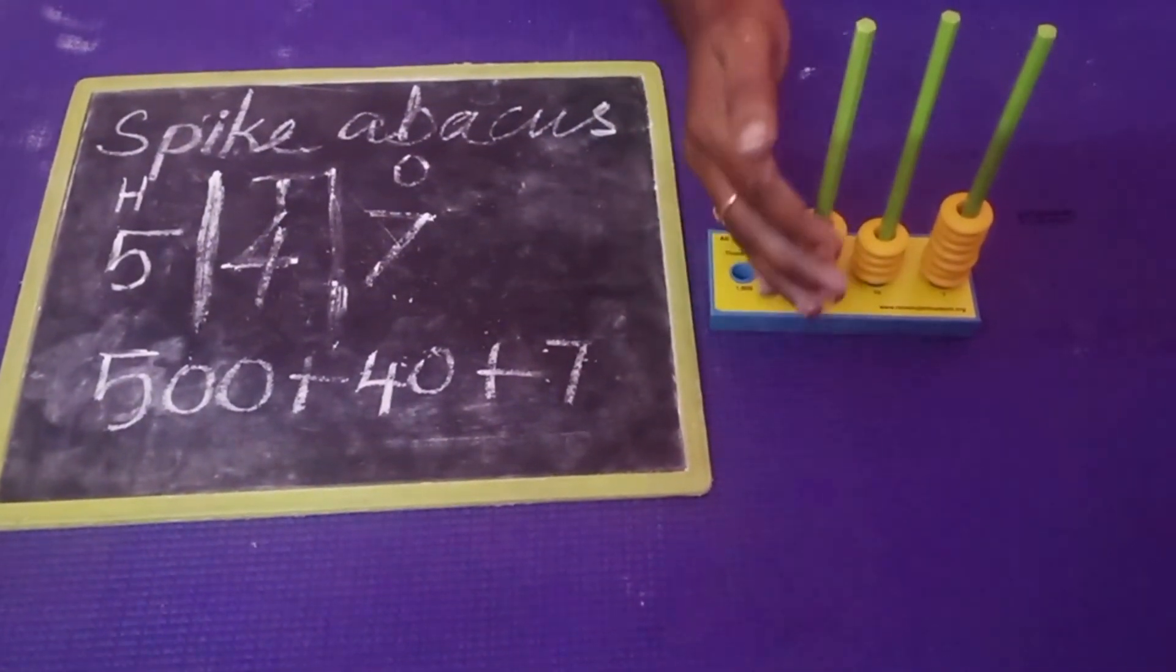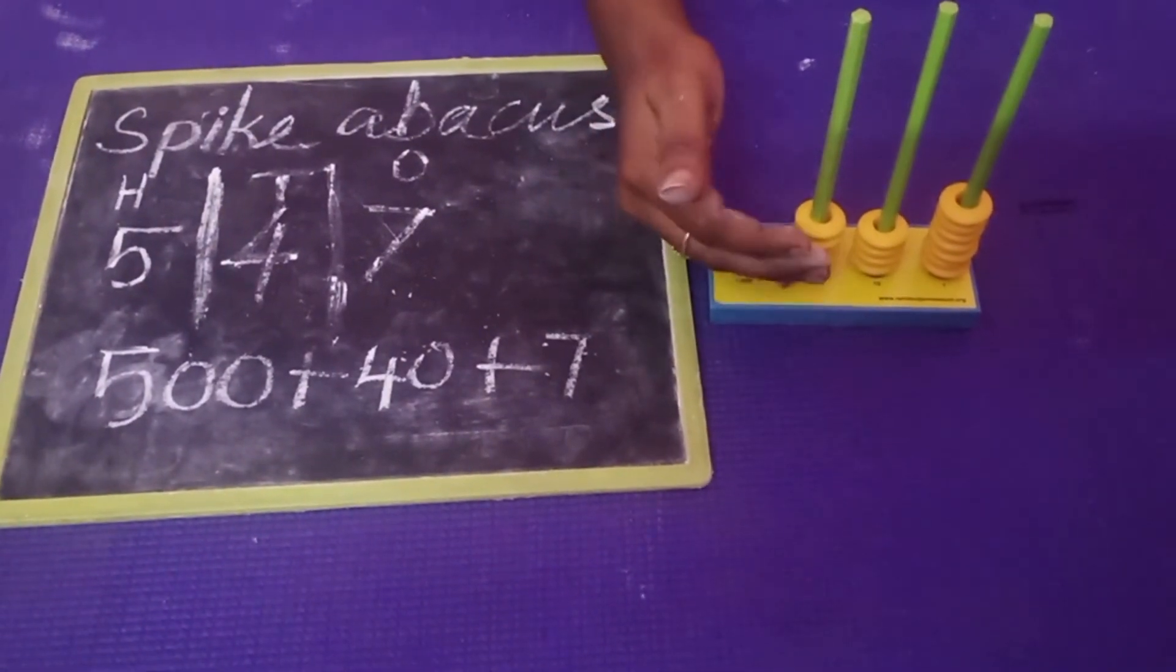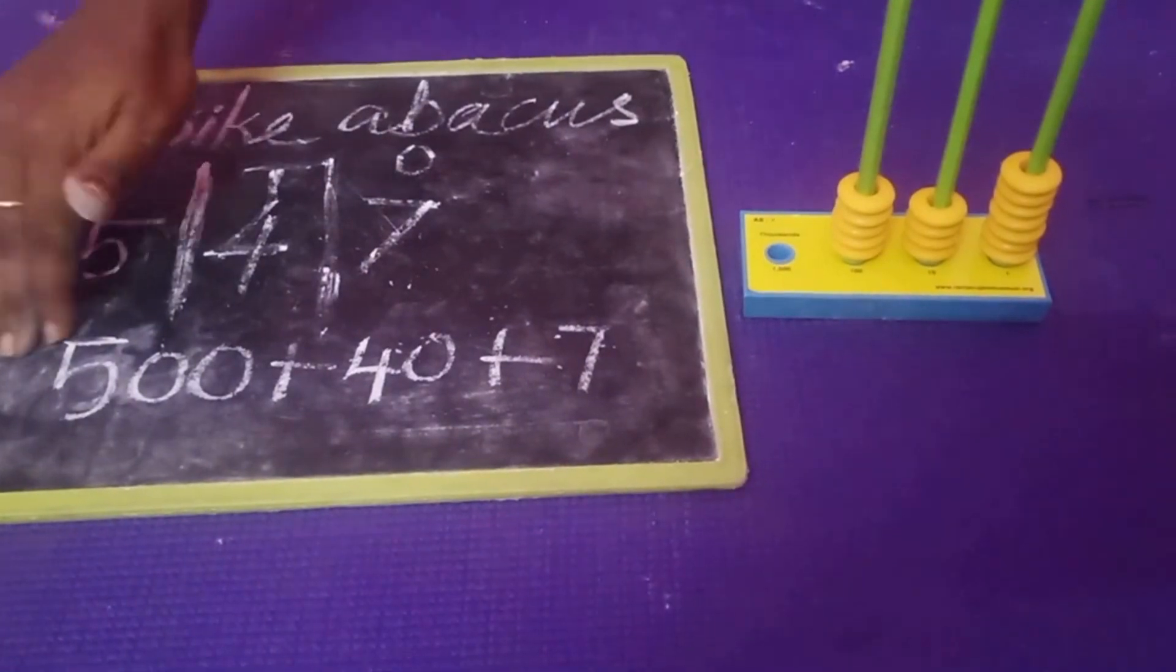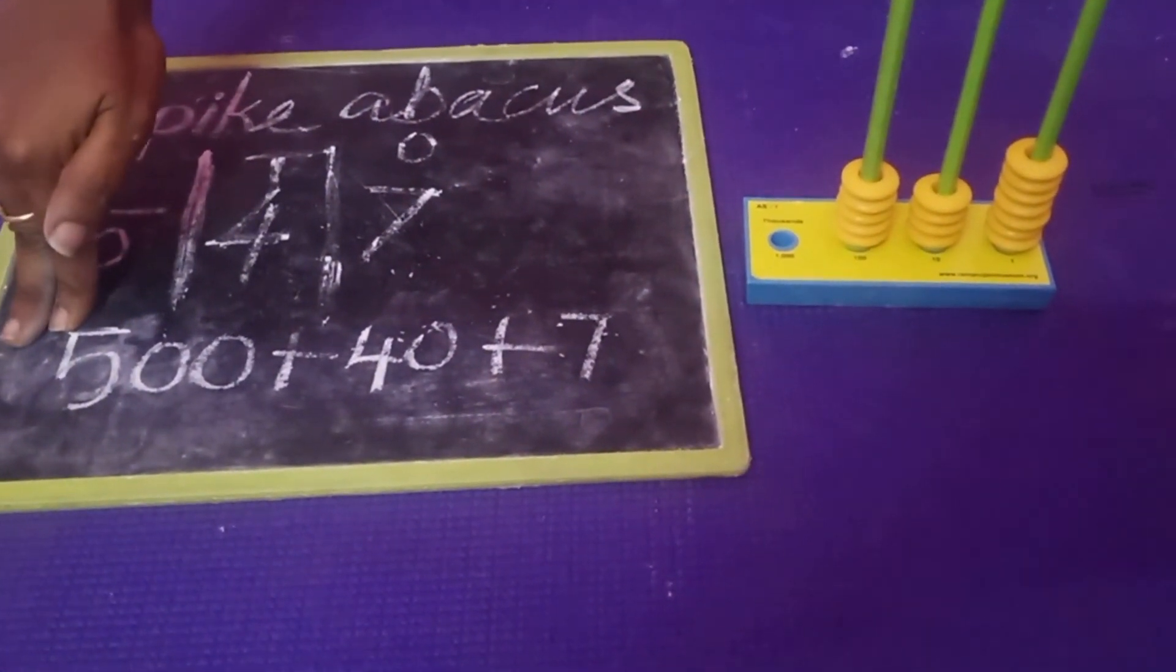After you fix the spikes, you represent the number in the spike abacus. After you represent it, you write the expanded form. Thank you.